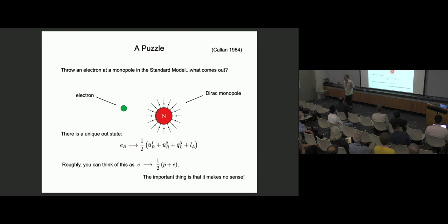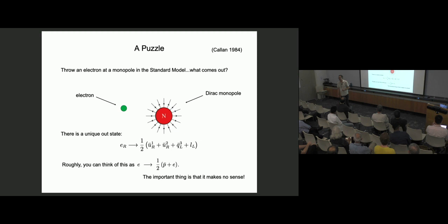This is what Callan showed, and the conclusion makes no sense at all — it makes no sense because there's a factor of a half. It doesn't make sense to throw in an electron and get out half an antiproton and half an electron; it's complete nonsense. And yet there's no other state you can put on the right-hand side with integer numbers in front of particles that carries the right charge. That was the puzzle Callan set 40 years ago. It went under the radar for many years, but in recent years there's been a succession of papers, and the community has come to realize this is an important problem.